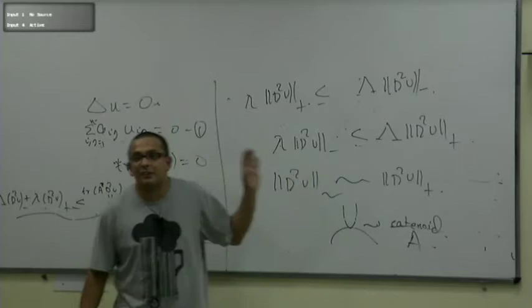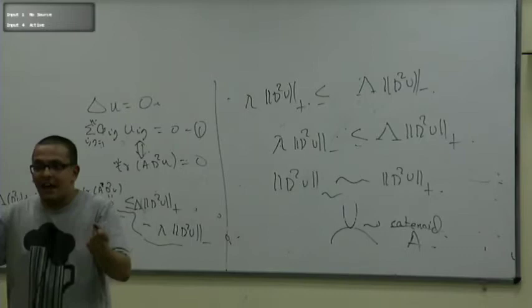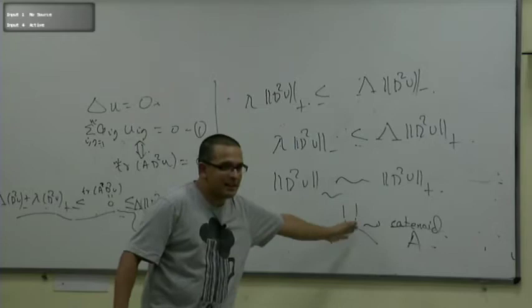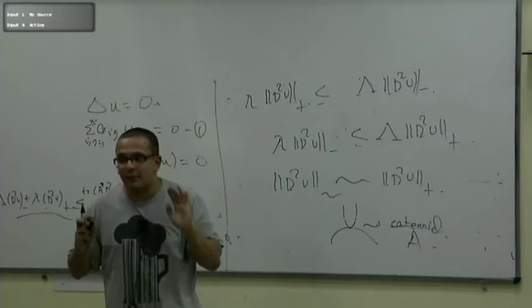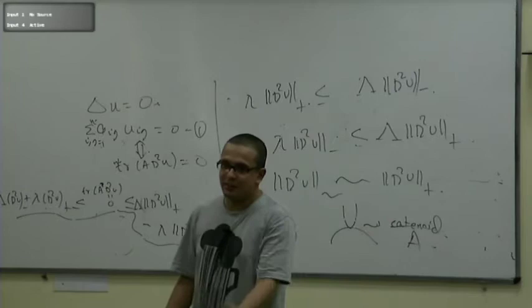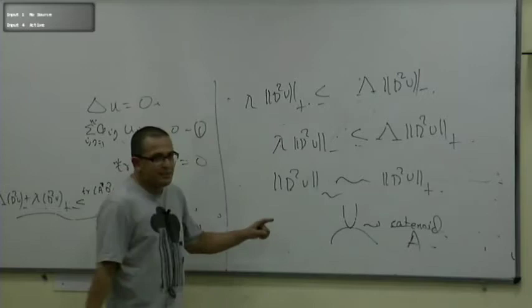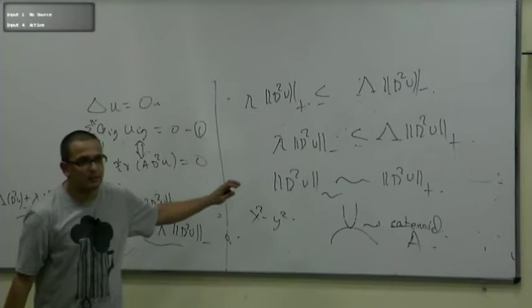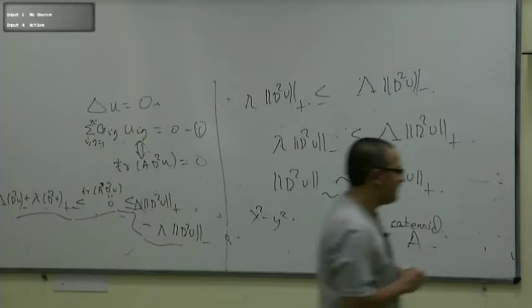Whenever you have a solution to an elliptic equation, the graph of the function has special properties: whatever negative curvatures it has must be equally balanced in other directions by positive curvatures. In that respect, it resembles certain properties of an affine function. For instance, x²-y² is a solution to the Laplacian where the positive and negative curvature parts balance.